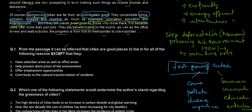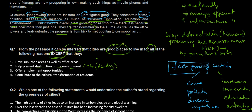From the passage, it can be inferred that cities are good places to live in for all the following reasons except. Option one: have suburban areas as well as office areas — this is nowhere listed in the passage, none of our keywords. Option two: help prevent destruction of the environment — eco-friendly, mentioned consistently in the passage, so people will want to live in an eco-friendly place. Option three: offer employment opportunities — clearly mentioned that cities offer decent jobs.